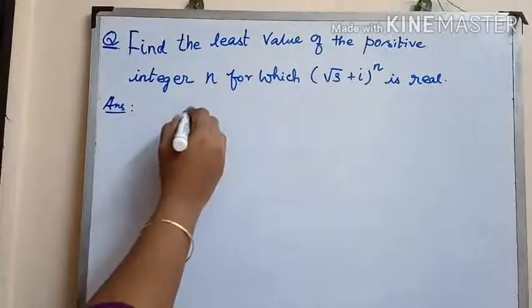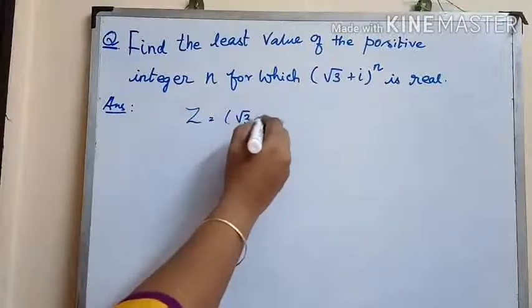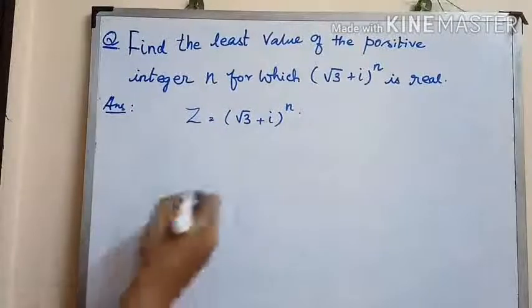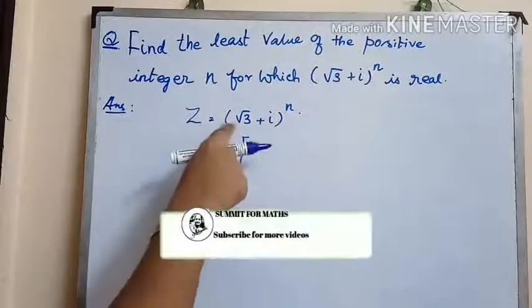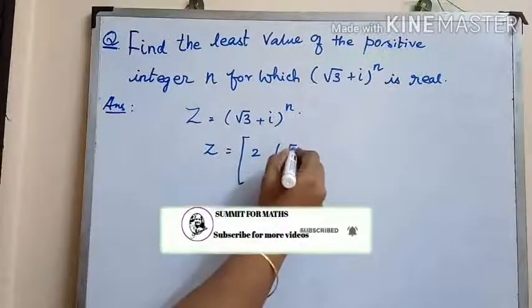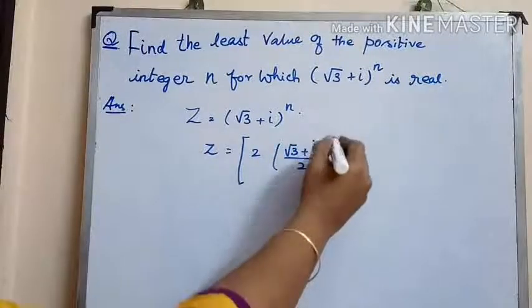Let us take z = (√3 + i)^n. Now multiplying and dividing it by 2, we get 2 times (√3 + i)/2 whole to the power of n.